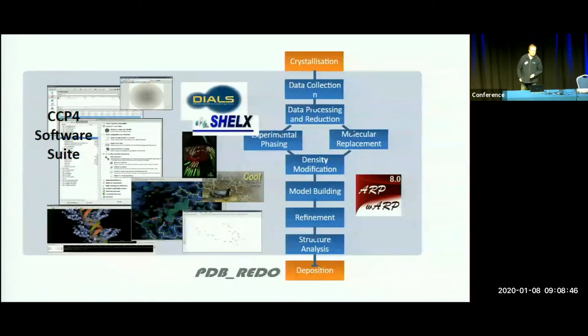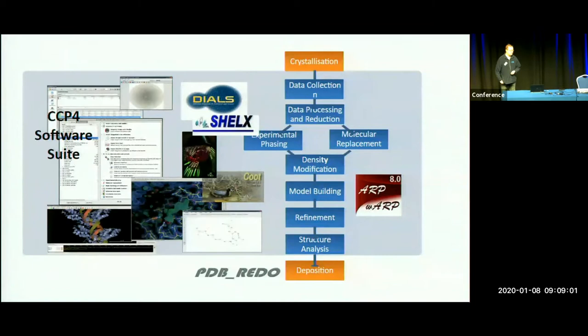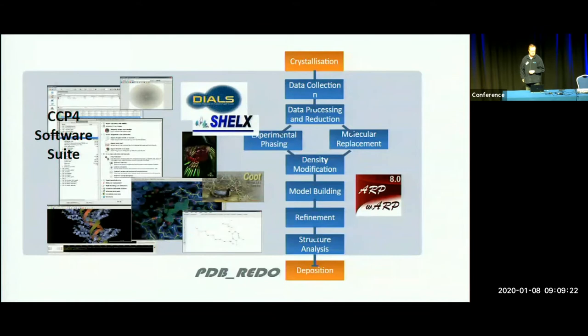So what is CCP4? It's a software suite with tools for all steps of structure solution, starting from data collection to data processing and reduction, phasing, density modification, model building, refinement, structure analysis, and now also deposition of your data. It includes a number of third-party packages such as the SHELX software suite, ARP/wARP model building program, ARCIMBOLDO, and COOT, which are also distributed with CCP4.